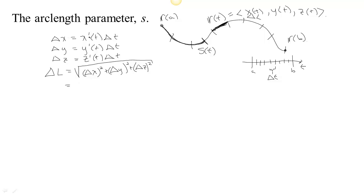Now, replacing delta x with x prime delta t, and delta y with y prime delta t, and delta z with z prime delta t, each of the terms is going to have a delta t squared in it. So I will factor that out so I don't have to write it too many times. And then I'll have x prime of t squared plus y prime of t squared plus z prime of t squared. I need one more set of parentheses there.